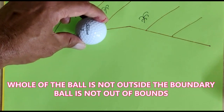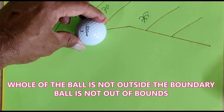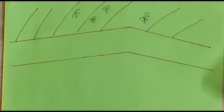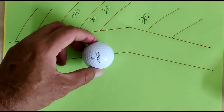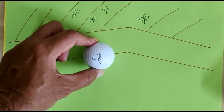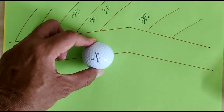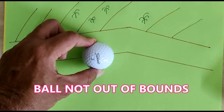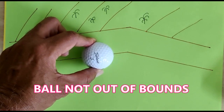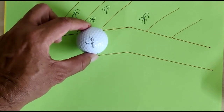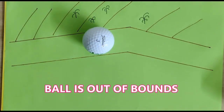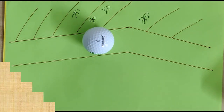However, if the ball is lying partially inside the line, then the ball is not out of bounds. Let us take another case: the outside boundary of the course is defined by a thick wall. A ball comes and rests at a point where it is half inside and half outside the wall — therefore this ball is in bounds. However, if the ball crosses the inner edge of the wall, then this ball is out of bounds.